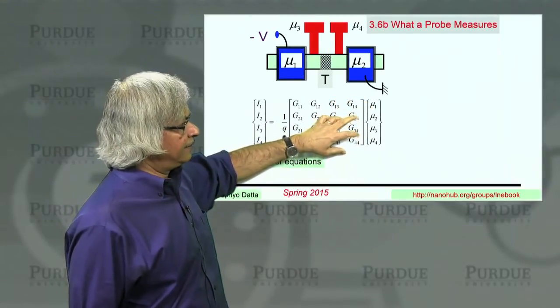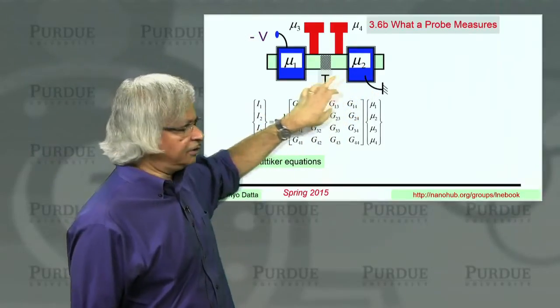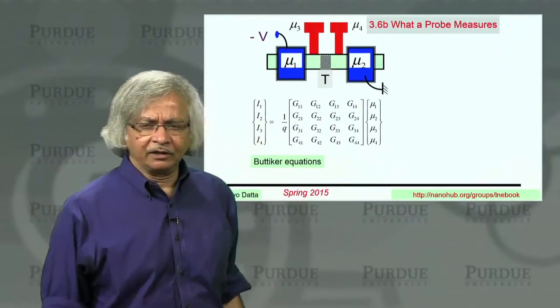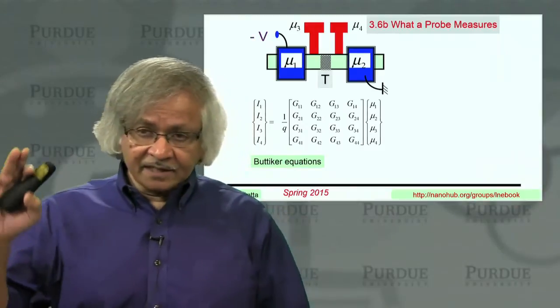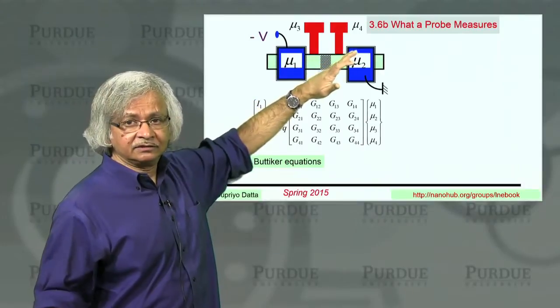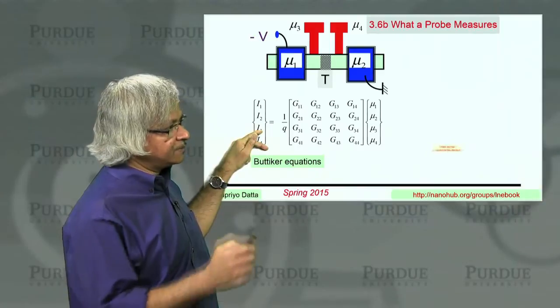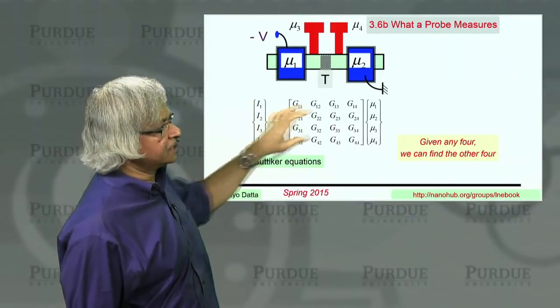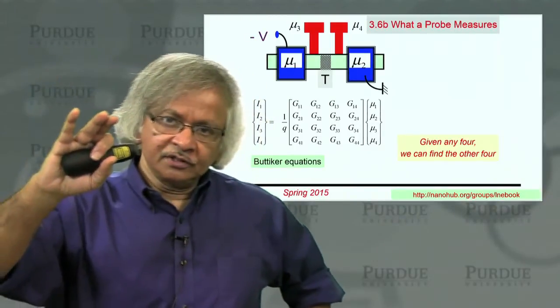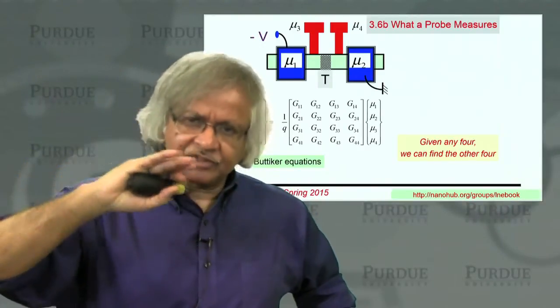But then you might say, well, I can't give you all these potentials. I could assume one of them to be ground, and then I could tell you what I applied here. But I have no idea what these are at, because they just float. I don't know what it is. Yes, that's true. But you see, on those floating terminals, you do not know the potentials, but you know the current. The current is zero. So I3 and I4 are zero. And so the key observation here is that you've got four currents, four potentials, eight quantities. But if I give you any four of those, you could find the other four. That's, I mean, it might take you a little work, but the point is it's straightforward algebra.